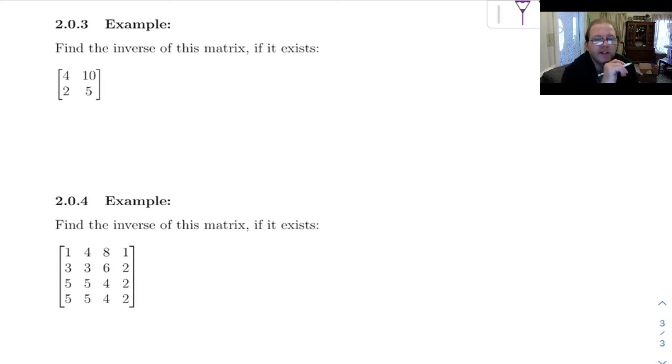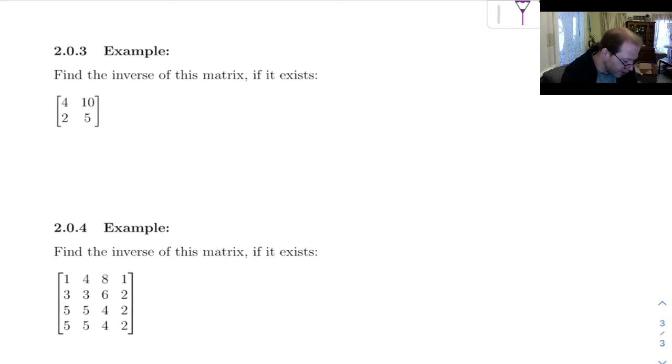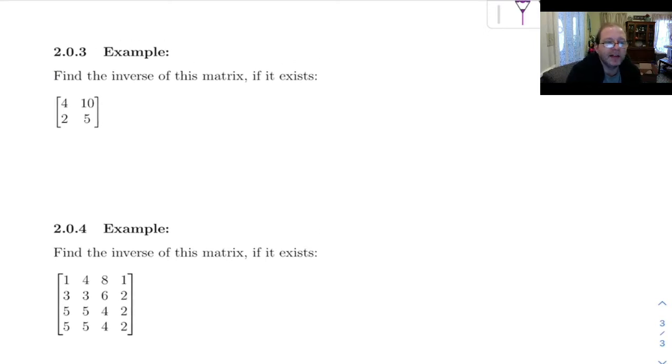I want to do a couple more examples of finding the inverse if it exists. I've got these two examples here, and I want to do both of these by hand. The second one down here where we've got a 4x4, you might think that's a lot of work, but I still want to do it by hand. I want to show you something interesting that happens. So first up, let's do this first one by hand.